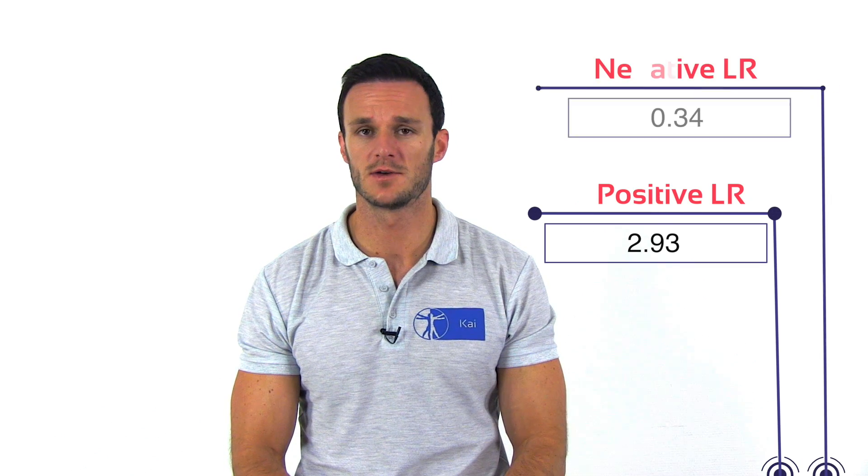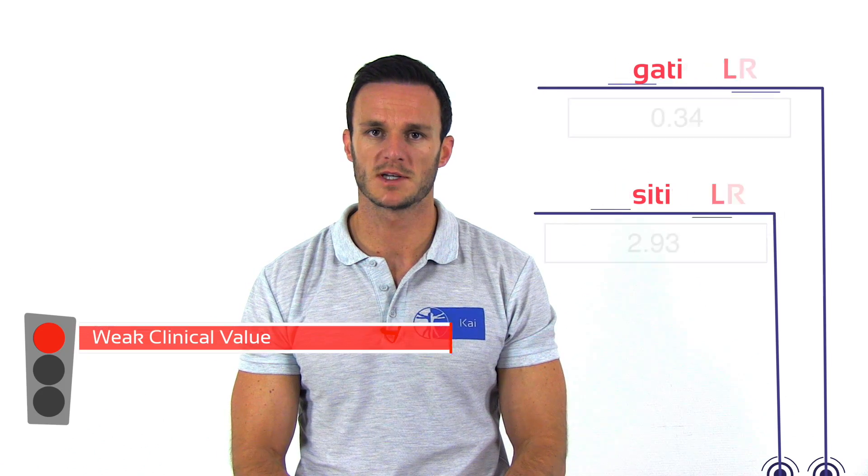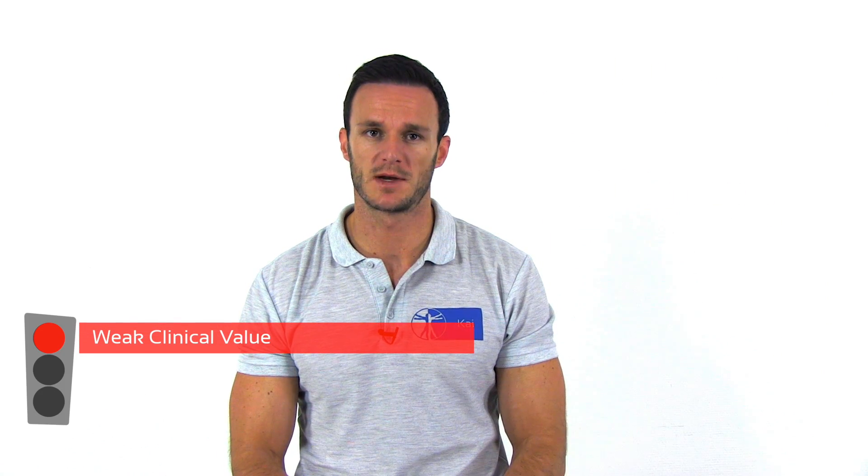Michener et al. from 2009 have come up with a test cluster of five different tests to diagnose subacromial pain syndrome. With three or more positive tests out of five, the positive likelihood ratio increased to 2.93. Less than three positive tests led to a negative likelihood ratio of 0.34. Due to the low change in post-test probability, this test battery has low clinical value in the diagnosis of subacromial pain syndrome.